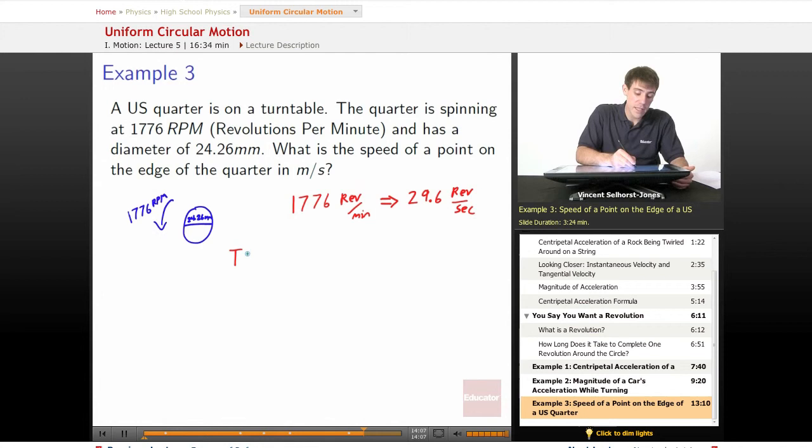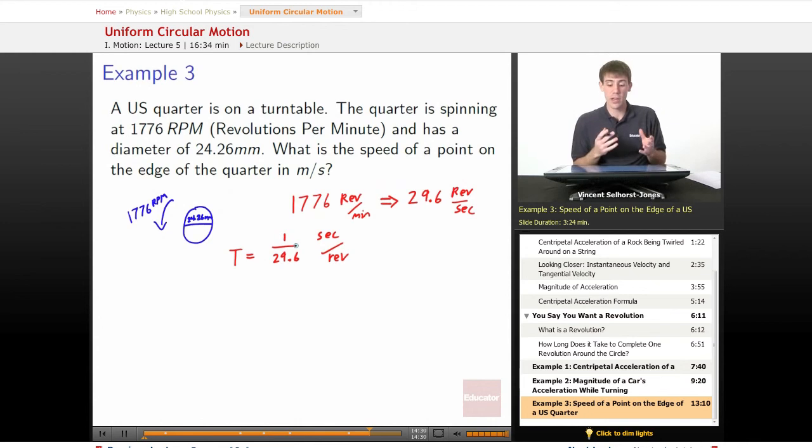But that's not equal to T. T is equal to that number flipped, because T is equal to 1 over 29.6, which is the number of seconds to the revolution. How many seconds does it take to give you a revolution? It takes 1 over 29.6 seconds per revolution, which makes a lot of sense. If we get 29.6 revolutions in a second, then if we want to see how many seconds it takes to do that, we're going to have to flip it. We'll take the reciprocal. 1 over 29.6 is equal to 0.0338 seconds. That's how long it takes to give us a single revolution.